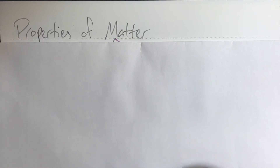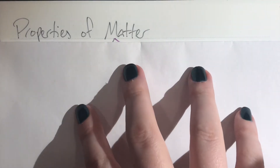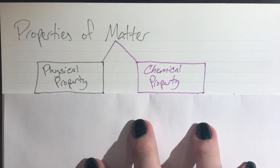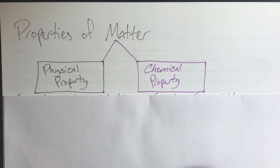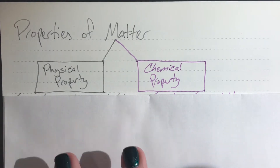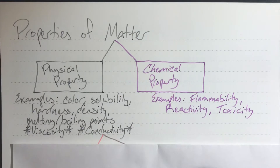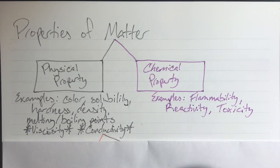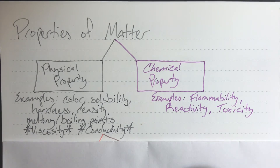Today we will be discussing the properties of matter. We have two main property types. A physical property is something that you can physically see without doing any tests. Some examples of a physical property could be color, solubility (which means can it dissolve in water or any other liquid), hardness, density, and melting and boiling points.